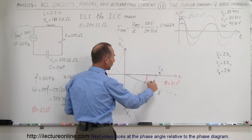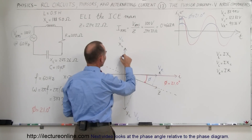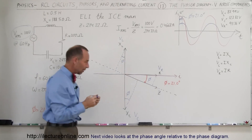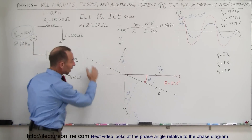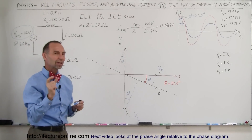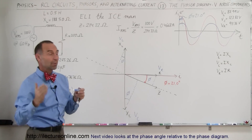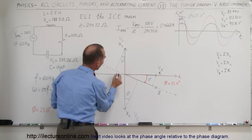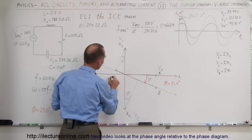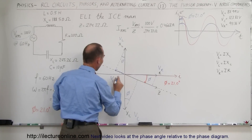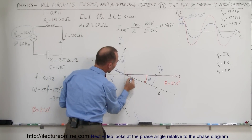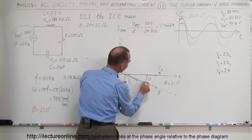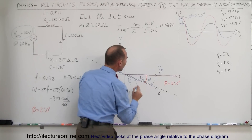Notice that the phase angle phi here is the same as this phase angle phi, and the same as this phase angle phi. The projection of those vectors onto this line actually represents the voltage at that moment in time. Remember, a phase diagram is a snapshot in time of what's happening in the circuit — so this is representative of the voltage across the inductor at that moment in time, this represents the voltage across the capacitor, and this represents the voltage across the resistor, all at that moment in time.